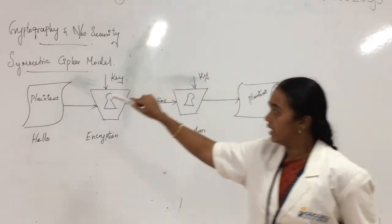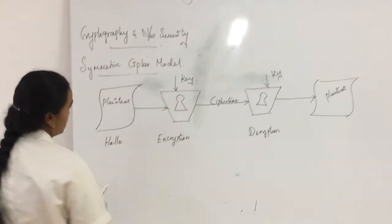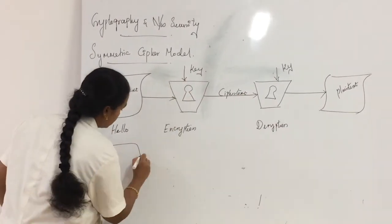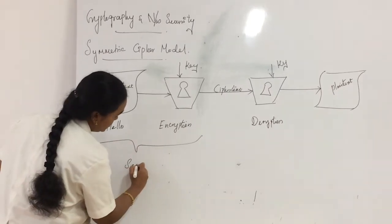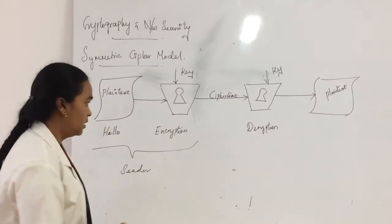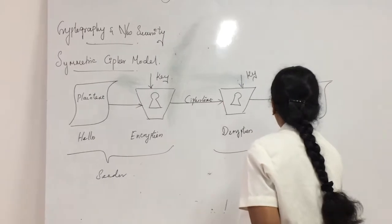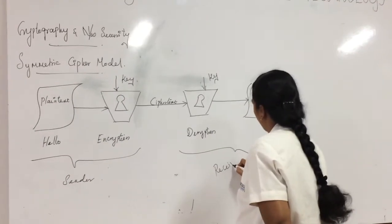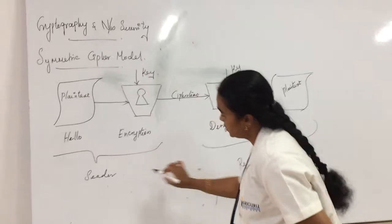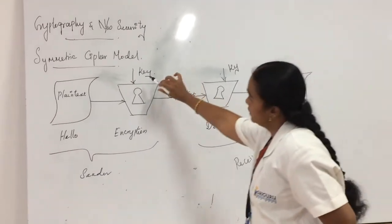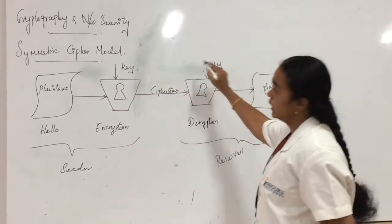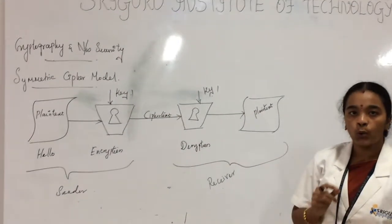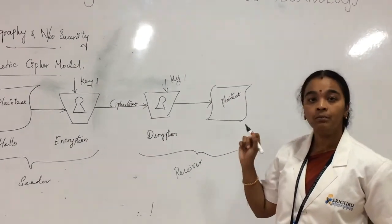Where does this Symmetric Cipher Model work? It works on both sides — the sender side and the receiver side. On both sides we are using the same key, like Key 1. That is why it is called a Symmetric Cipher Model.